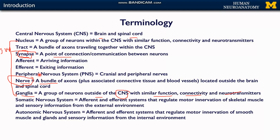The peripheral nervous system consists of cranial nerves and peripheral nerves, located in the periphery — the CNS is in the center and the peripheral nervous system is in the periphery. There is also the somatic nervous system, which is the part of the nervous system that regulates motor and sensory innervation of skeletal muscles. Since skeletal muscles are voluntary in action, the somatic nervous system deals with structures that are voluntary in function.